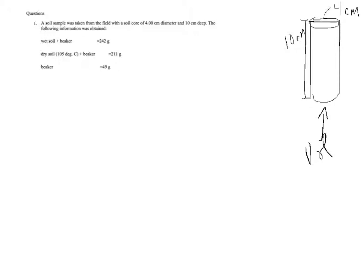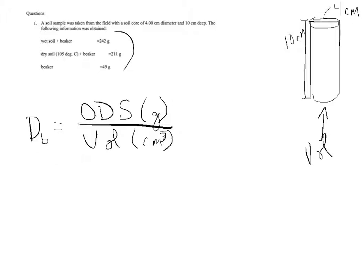We've got 4 centimeters in diameter and 10 centimeter depth of this soil. We'll need to know that because this gives us the volume of the soil we got from the field. The bulk density, capital D lowercase b, equals the oven dry soil in grams divided by the volume in cubic centimeters.